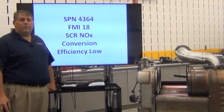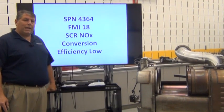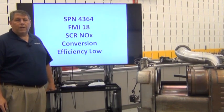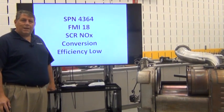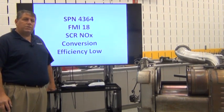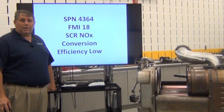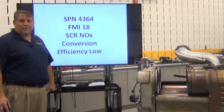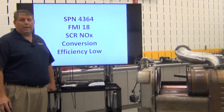We're here today to talk about code 4364 FMI 18, SCR NOx Conversion Efficiency Low. There's about 31 steps in Power Service Literature for this code. What we'll do is try and explain some of the steps in the process, but always use PSL or Advanced Diagnostics in Diagnostic Link.